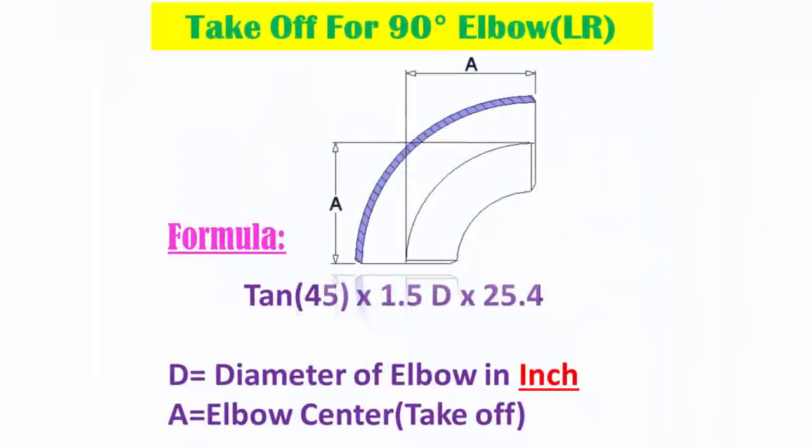This is the formula to find 90 degree elbow takeoff. D means diameter of elbow in inches.